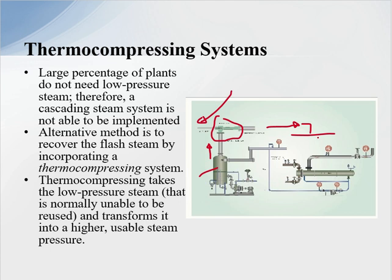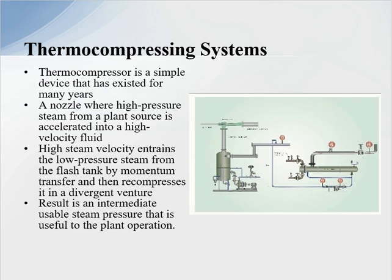Basically, the thermal compressor takes low pressure steam that is normally unable to be reused and transforms it into a higher, usable steam pressure we can use in the process. The thermal compressor is a simple device that has existed for many years. A nozzle accelerates high pressure motive steam to a high velocity, which entrains the low pressure steam from the flash tank by momentum transfer, then recompresses it in a divergent venturi, resulting in an intermediate usable pressure that is useful for plant operation.